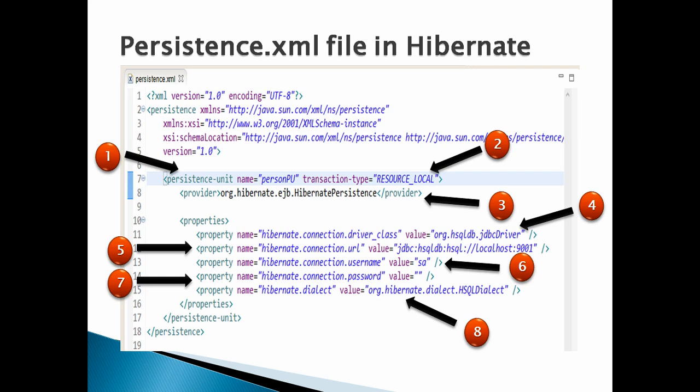Number eight: in persistence.xml we have to provide the dialect for HSQLDB. It takes a property named 'hibernate.dialect' with value 'org.hibernate.dialect.HSQLDialect'. This configures the way Hibernate communicates with the underlying database for implementing object-to-relational mapping.